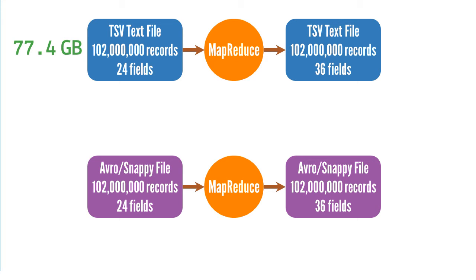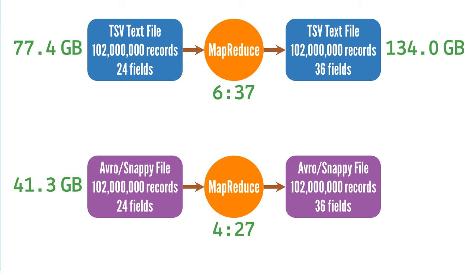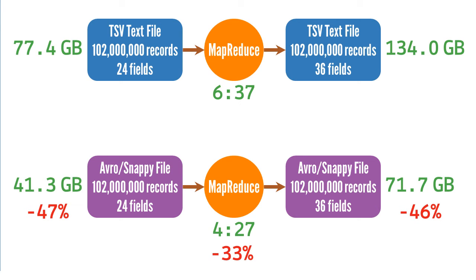The text input file used about 77 gigabytes of raw HDFS storage, and it took the MapReduce program 6 minutes and 37 seconds to create a 134-gigabyte text output file. The Avro input file used about 41 gigabytes of raw HDFS storage, and it took the MapReduce program 4 minutes and 27 seconds to create a 72-gigabyte Avro output file. The space-saving benefit was achieved: my ingested and refined Avro files both consumed about half as much space as the text files. And the MapReduce program that processed the Avro file took only two-thirds the amount of time it took to process the text file.